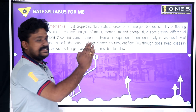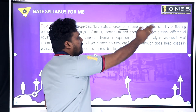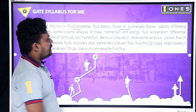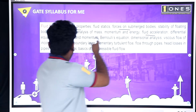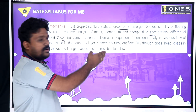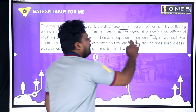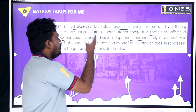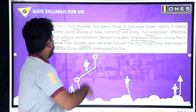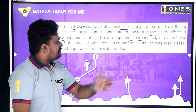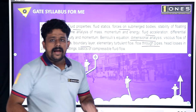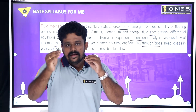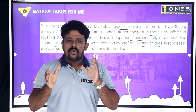For mechanical students, the syllabus covers: fluid properties, fluid statics, forces on submerged bodies, stability of floating bodies, control volume analysis, momentum and energy, fluid acceleration, differential equations, continuity momentum, Bernoulli's equation, dimensional analysis, viscous flow, compressible flow, boundary layer, pipe fittings, and flow through pipes. The topics are almost similar to civil.